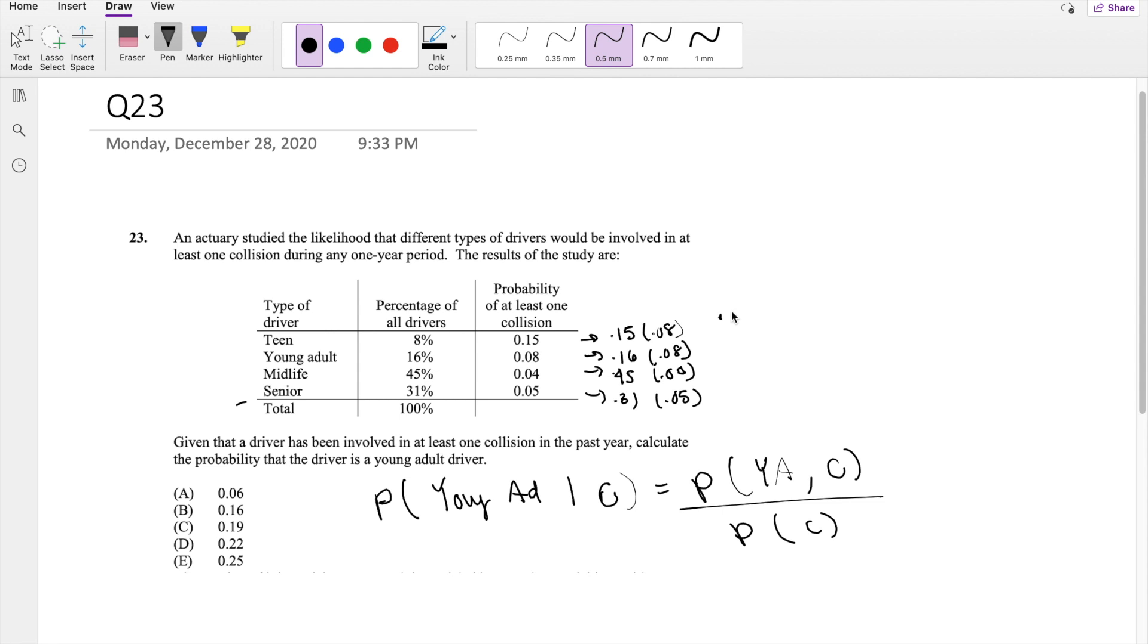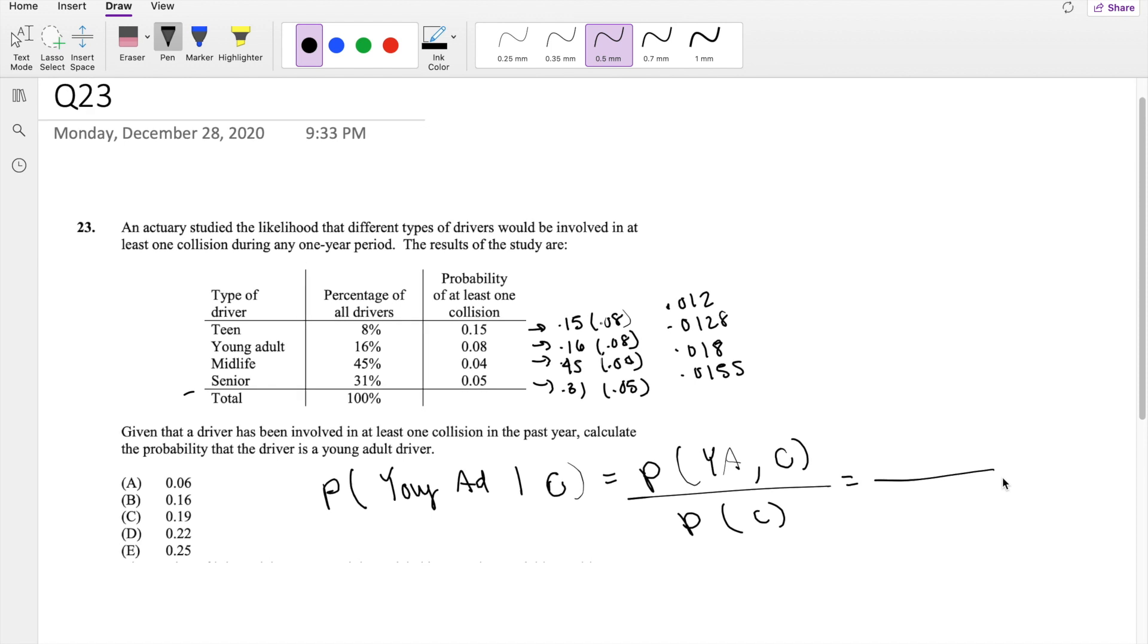So this is equal to 0.012, 0.0128, 0.018, and lastly 0.0155. So the probability that they are young adults and have a collision is this probability right here, 0.0128.